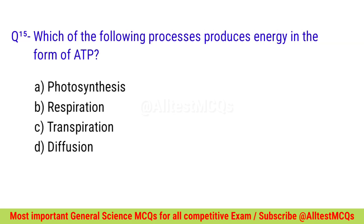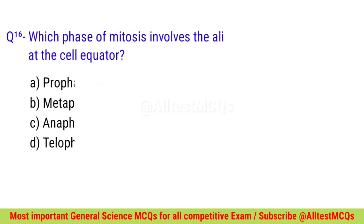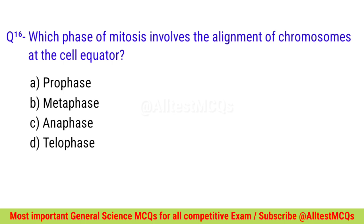Question number fifteen: Which of the following processes produces energy in the form of ATP? Right option is B — Respiration. Question number sixteen: Which phase of mitosis involves the alignment of chromosomes at the cell equator? Correct option is B — Metaphase.